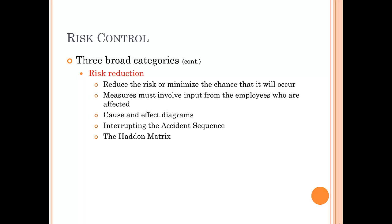Risk reduction means minimizing the chance that an injury will occur. We should receive input from employees affected by the risk, since most chiefs don't respond to medicals and we need to find out from our employees if we can do something differently. New CPR machines are now lightweight enough to carry people downstairs without doing CPR manually. We can also use cause and effect diagrams, interrupt the accident sequence, and use the Haddon matrix.